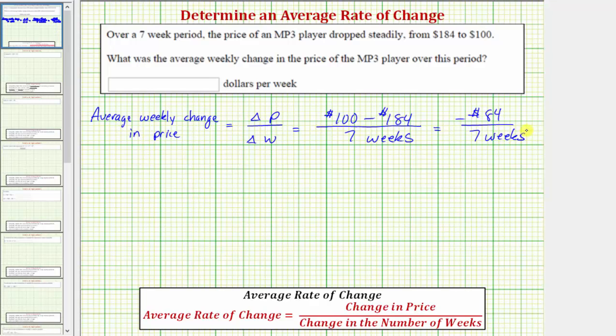And because negative 84 divided by seven is equal to negative 12, the average weekly change in price equals negative $12 per one week, which we normally just write as negative $12 per week.